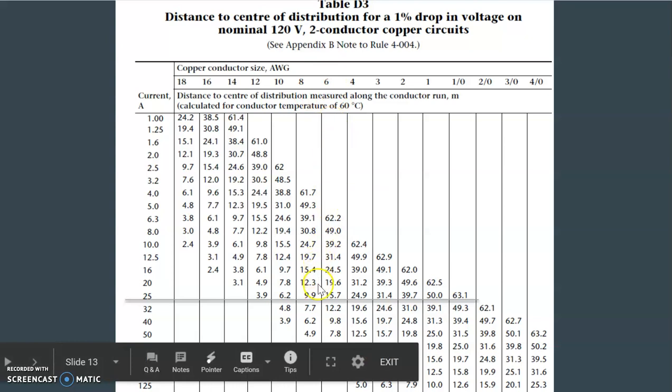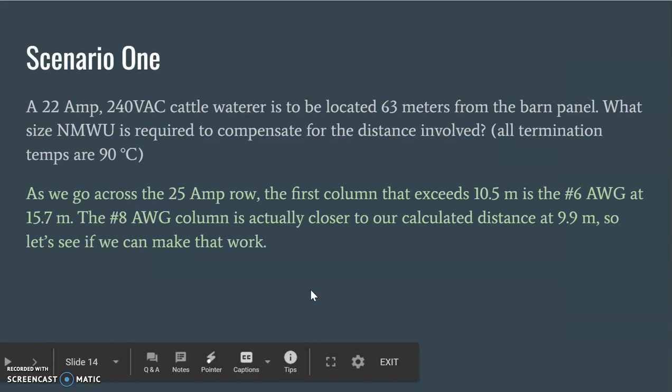Notice though that an 8, a number 8 is 9.9. What does that mean? Well, when we're looking at those two columns, you can see that 9.9 meters is actually closer to 10.5 than 15.7 that a number 6 is good for. So can we try to make the 9.9 meters work? Is there a way?